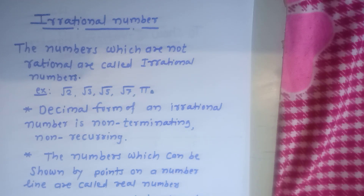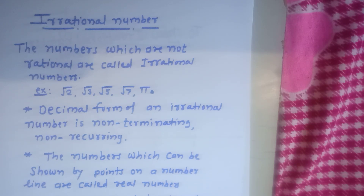For example, root 2, root 3, root 5, root 7, and pi are irrational numbers. The decimal form of irrational numbers is non-terminating, non-recurring. We know that the decimal form of rational numbers is either a terminating or non-terminating recurring type.